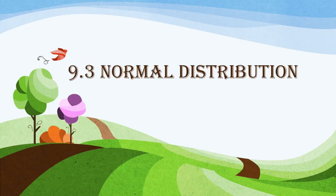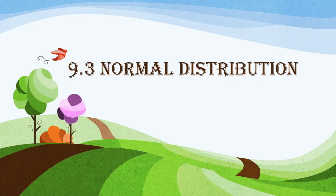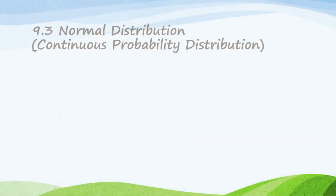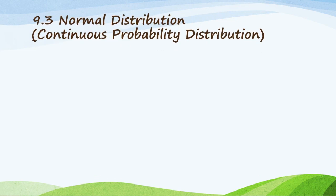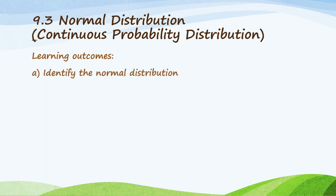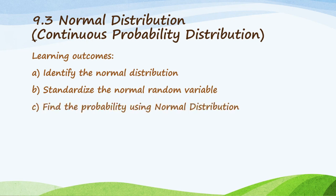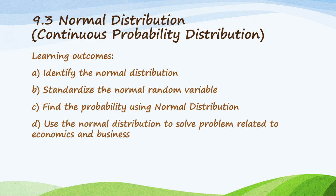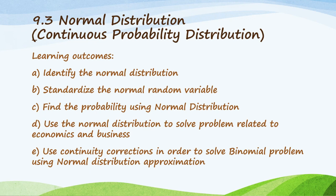Let's continue. Section 9.3, normal distribution. In normal distribution, a normal distribution is a continuous probability distribution. The learning outcomes: students should know how to identify the normal distribution, how to standardize the normal random variable, and define the probability using normal distribution. Use the normal distribution to solve problems related to economics and business, and also use continuity corrections to solve binomial problems using normal distribution approximation.